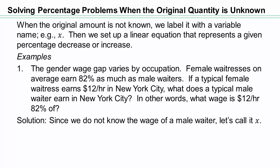Since we do not know how much money a male waiter in New York makes per hour, let's call it x. What we do know is that $12 per hour represents 82% of x. Do you remember how we talked about what of means? 82% of x means 82 over 100, the of means multiplication of x, and the is means equals. So that tells you how you can translate words into equations.